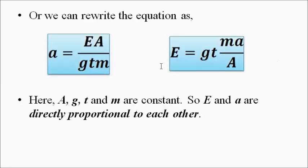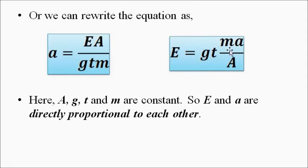This is the main equation of the piezoelectric accelerometer: E = (g·t·m/A) · a. Since g, t, m, and A are all constant, the output electric potential (voltage) is directly proportional to the acceleration to which the device is subjected.